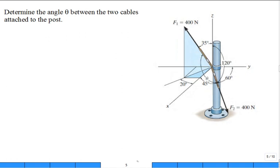Determine the angle theta between two cables attached to the post. What's the strategy for solving for this angle theta? This is a force going out F1. This is a force going out F2. This is that angle in between. Looks like that angle is greater than 90 degrees, doesn't it?